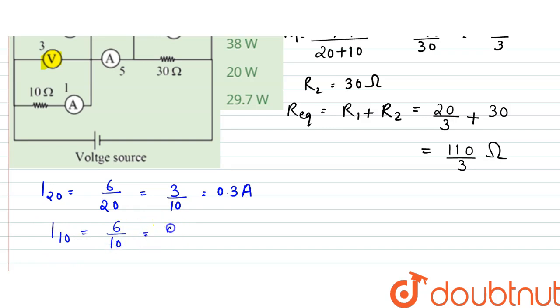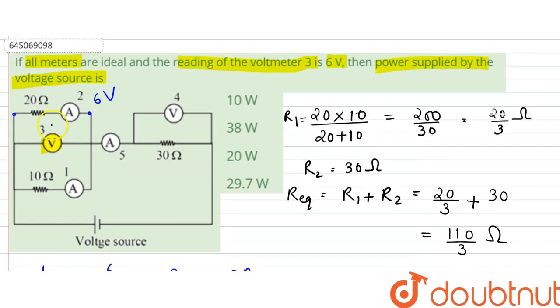There would not be any current passing through this voltmeter. For ideal voltmeter, the resistance is infinity, and for ideal ammeter, the resistance is zero, so there won't be any current passing through this voltmeter branch.